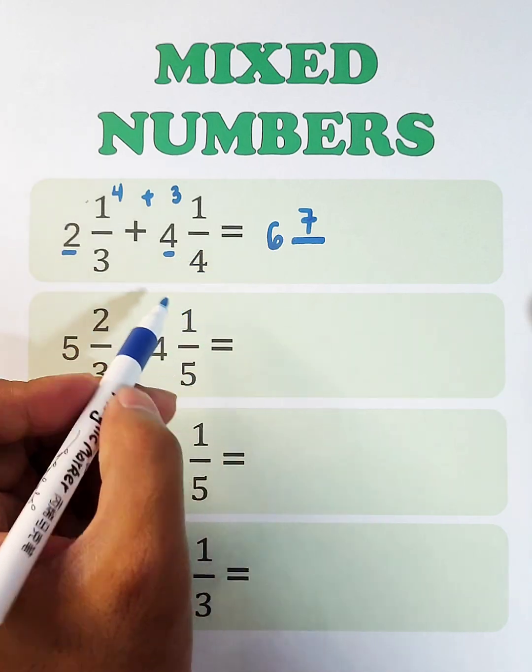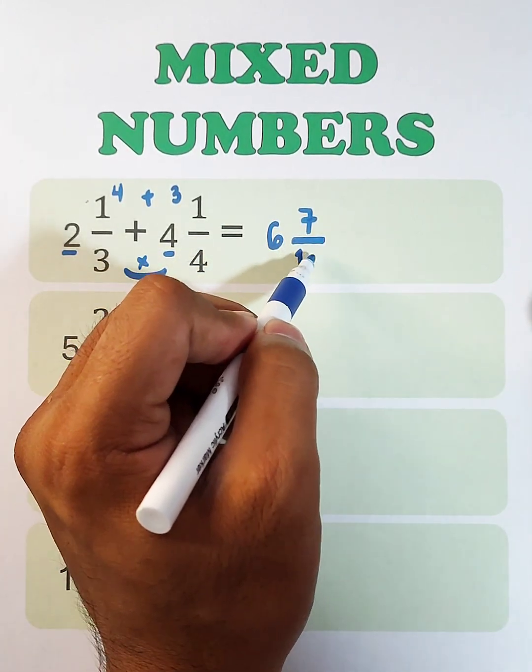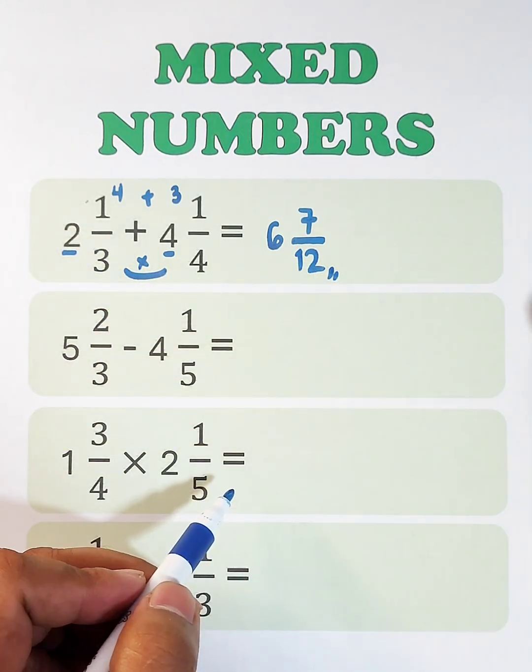And for the denominator, multiply these two numbers. We have 3 times 4, which is 12. And as you can see, the correct answer is 6 and 7 over 12.